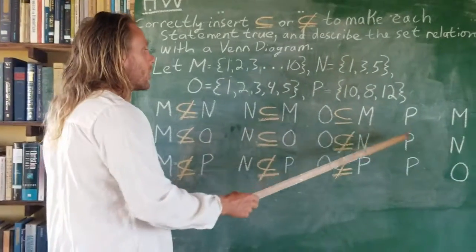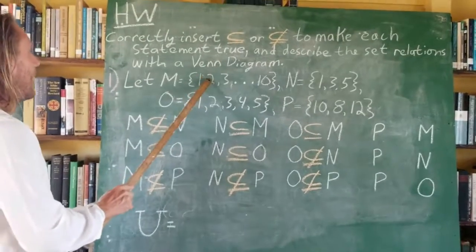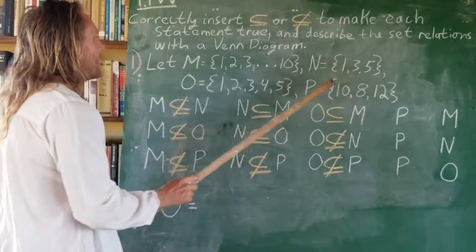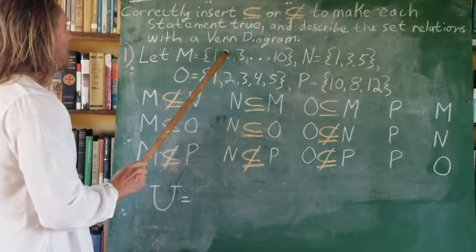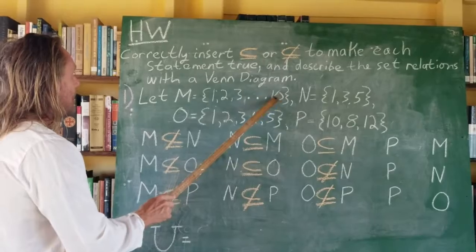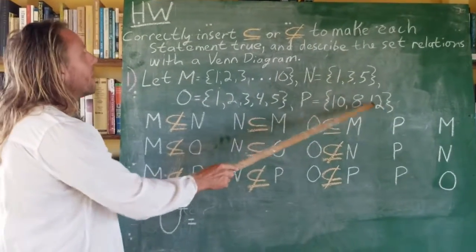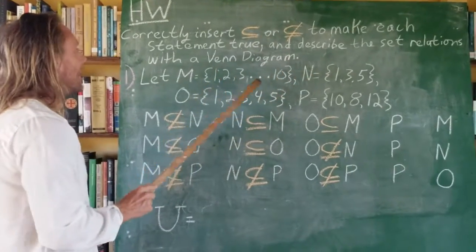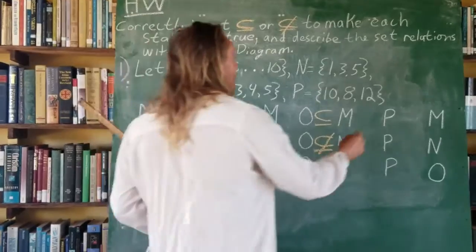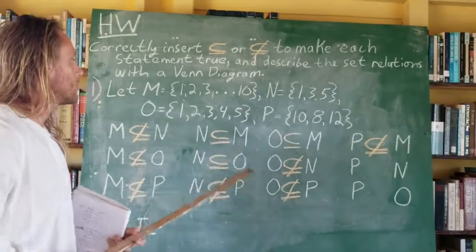One more combination with respect to P. Is P a subset of M? All the elements in P would have to be contained as distinct elements within M. Is there a 10? Yes. An 8? Yes. It looks like we're doing good — one more: 12? No, that's outside the set of M. So P is not a subset of M, despite how close it was. Every element has to correspond.